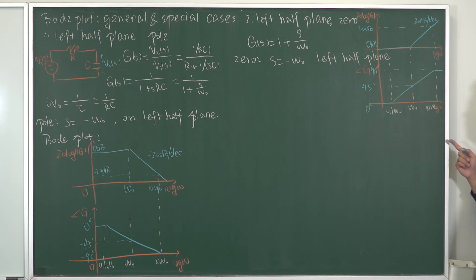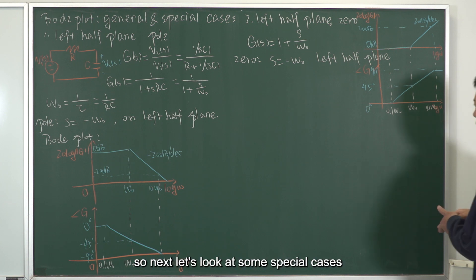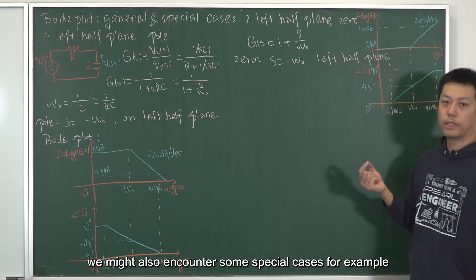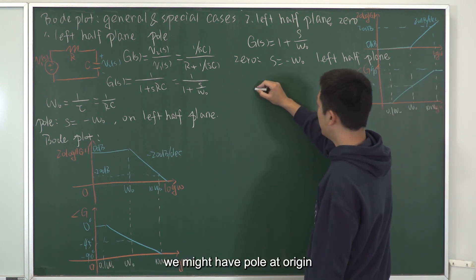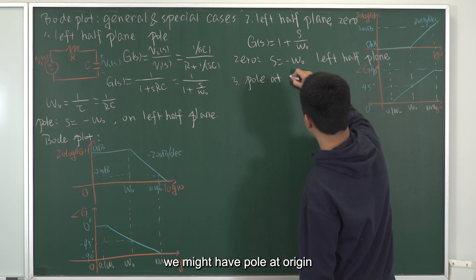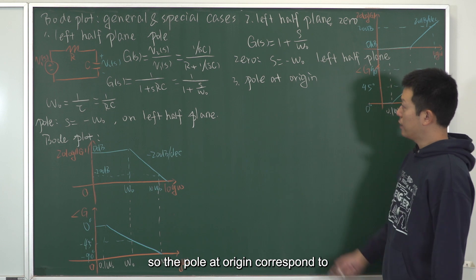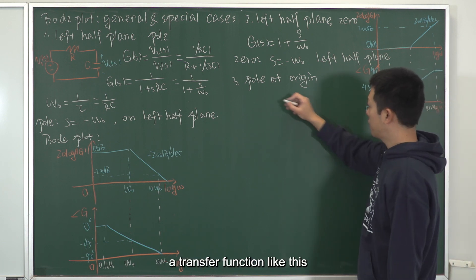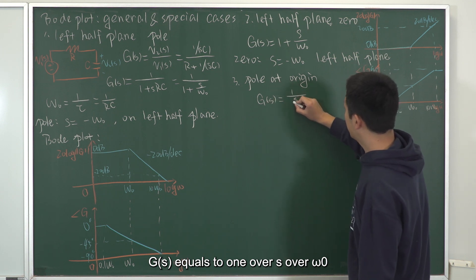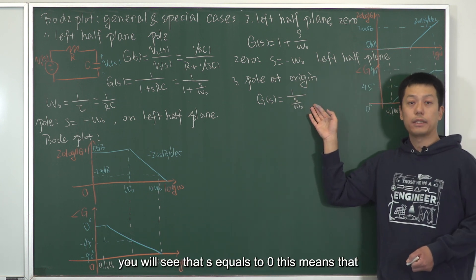That is the Bode plot for the left half-plane zero. Next, let's look at some special cases — cases 1 and 2 were general cases; we might also encounter special cases. For example, we might have a pole at the origin. The pole at the origin corresponds to a transfer function G(s) equals 1 over (S over omega_0). Setting the denominator to zero gives S equals 0, meaning the system has a pole at the origin.